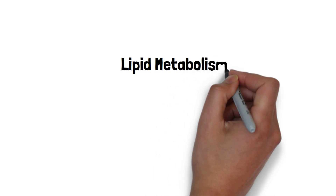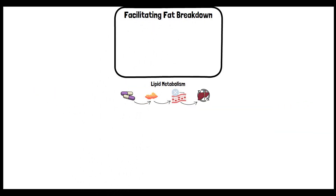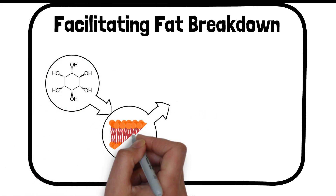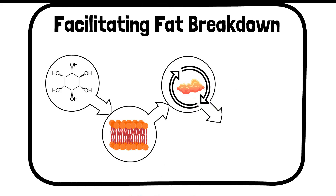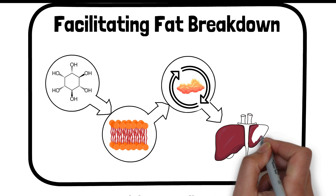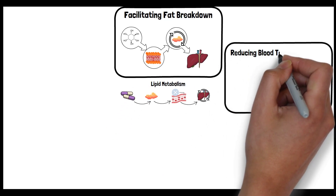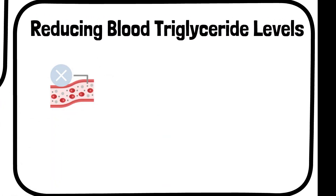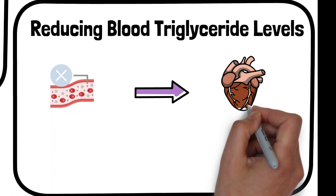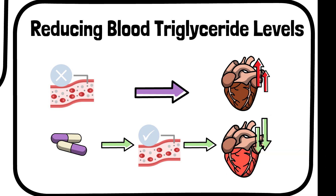Inositol is involved in the breakdown of fats and helps in reducing blood triglyceride levels, contributing to better overall lipid metabolism. As a component of certain phospholipids, it plays a role in the structural integrity of cells, including those in the liver where fat metabolism primarily occurs. By contributing to the efficient functioning of these cells, inositol helps in the proper breakdown and distribution of fats. High levels of triglycerides in the blood are a risk factor for cardiovascular diseases, and inositol aids in lowering these triglyceride levels.